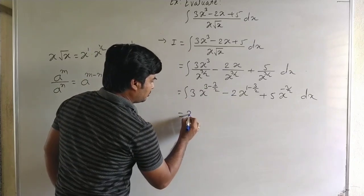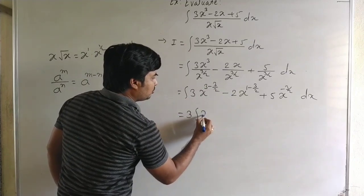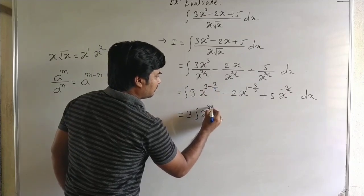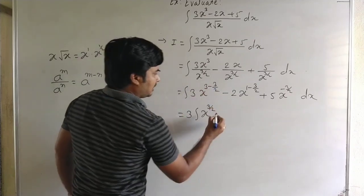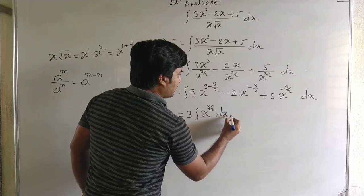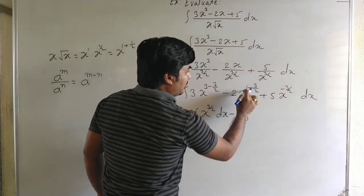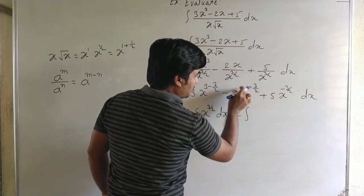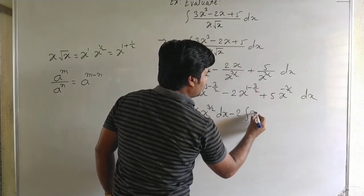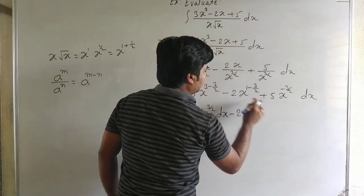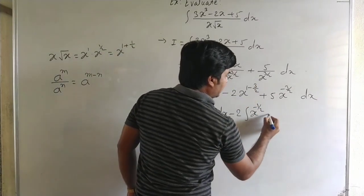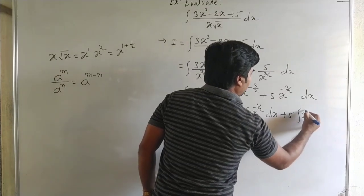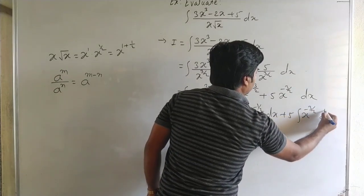The 3 is a constant and can be written outside the integral. x to the power 6 minus 3 by 2 equals x to the power 3 by 2. Minus 2 into x to the power 1 minus 3 by 2 — that is 2 minus 3 equals minus 1 — so it is x to the power minus 1 by 2. And plus 5 into x to the power minus 3 by 2 dx.